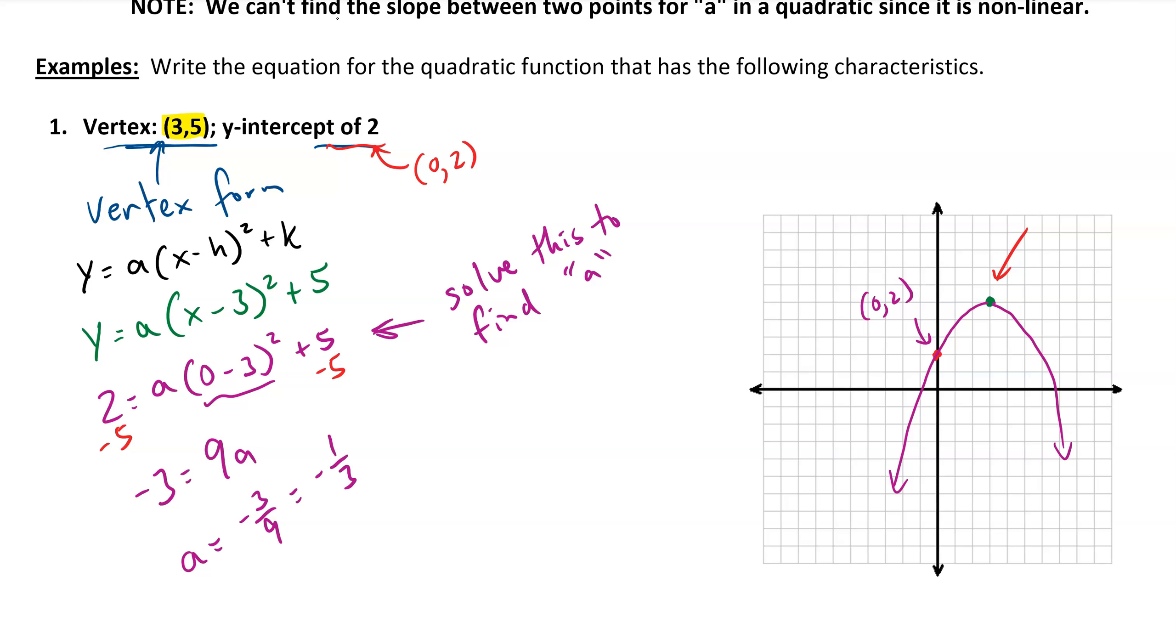So we can put that all together to get our final formula for the function. We have y equals -1/3(x minus 3) squared plus 5.